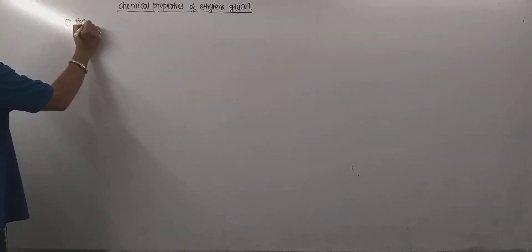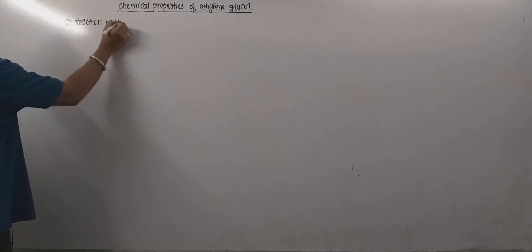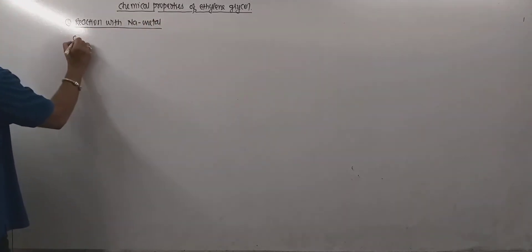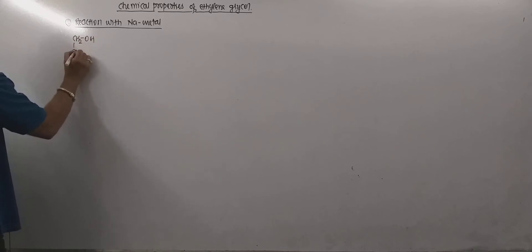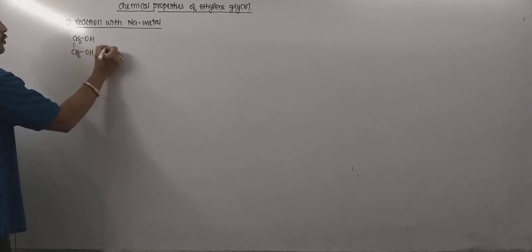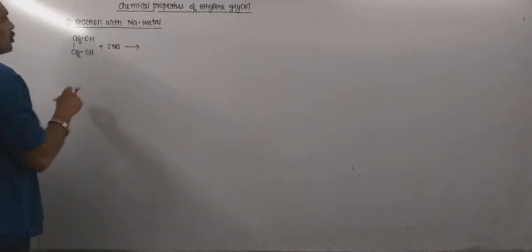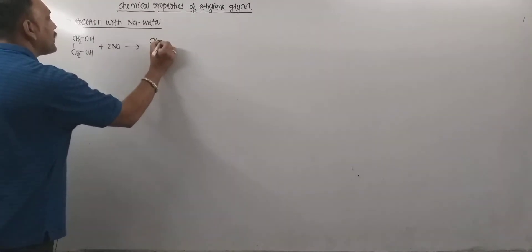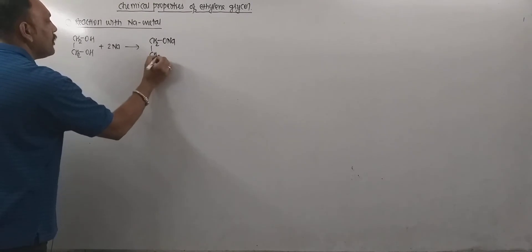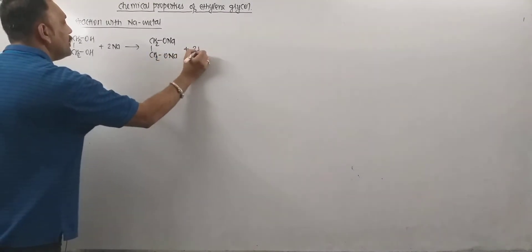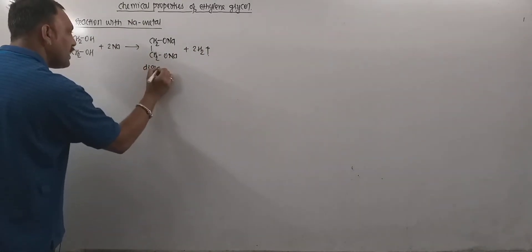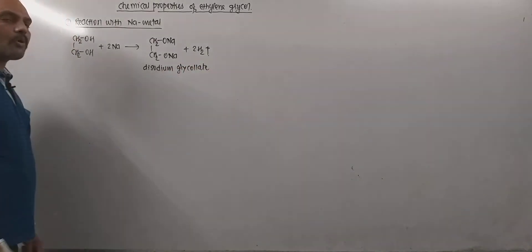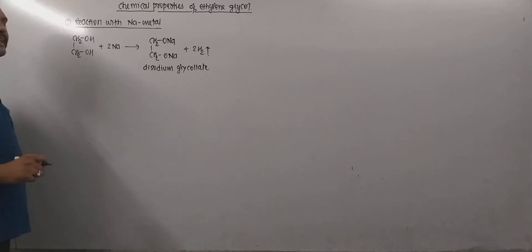The very first property to discuss is the reaction with sodium metal. Sodium is a reactive metal, so it is capable of displacing hydrogen from the OH group. When we treat ethylene glycol with sodium, the hydroxyl hydrogen atoms get replaced by sodium, leading to the formation of a product with evolution of hydrogen gas. This product is known as disodium glycolate.